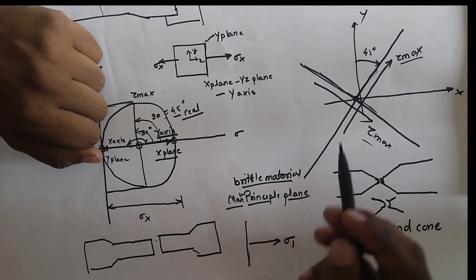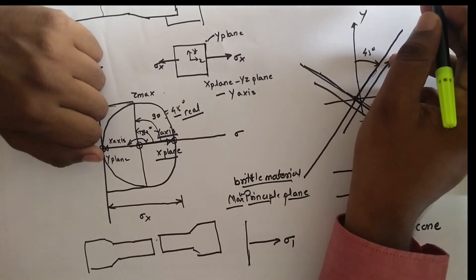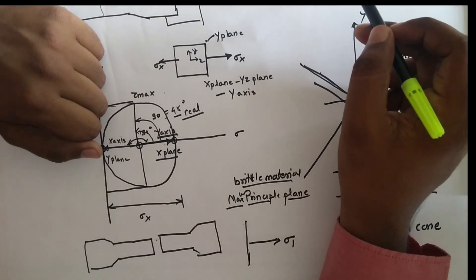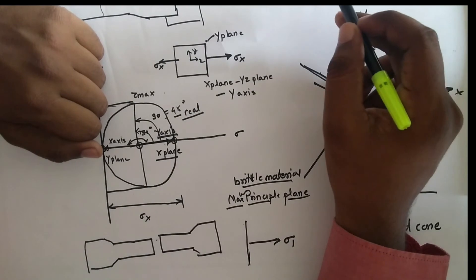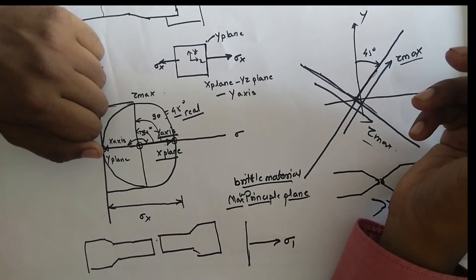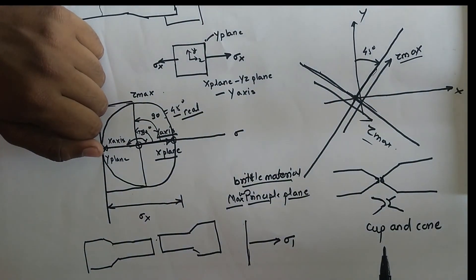But instead of that, if you take any ductile material like plastic or steel, it will fail in a cup-and-cone shape. This is not the same as brittle failure.